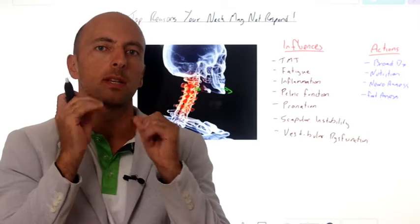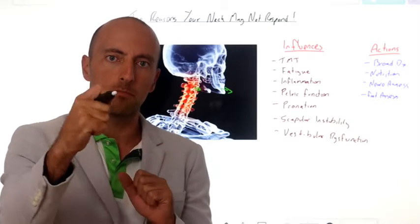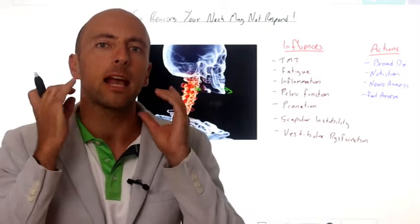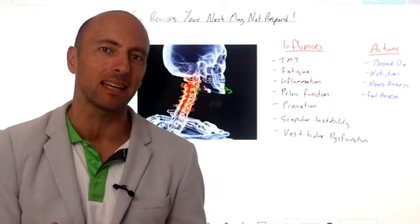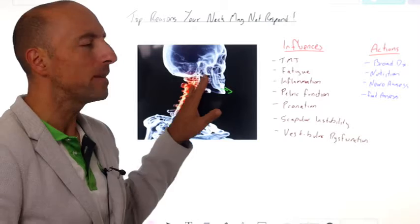As the jaw moves, the second cervical vertebrae tends to move with it, and this can actually keep causing misalignments in the neck and altered biomechanics of the neck.